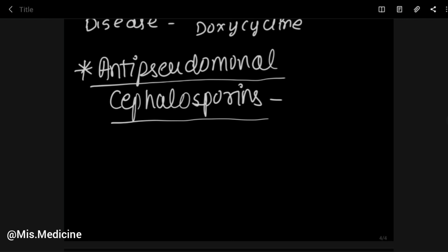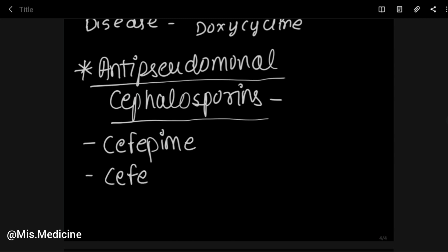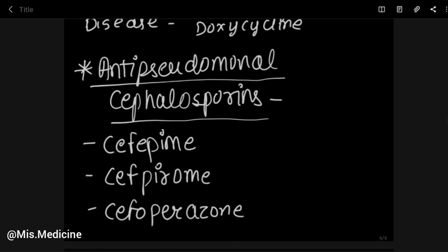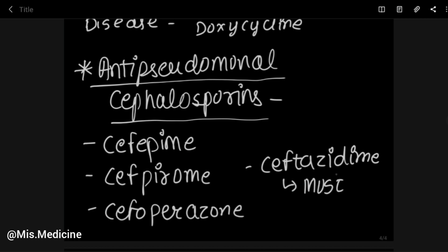Anti-pseudomonal Cephalosporins include Cefepime, Cefpirome, Cefoperazone, and Ceftazidime. Ceftazidime is the most effective anti-pseudomonal Cephalosporin.